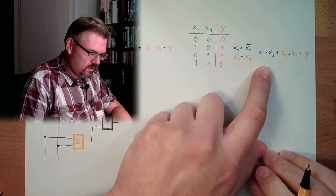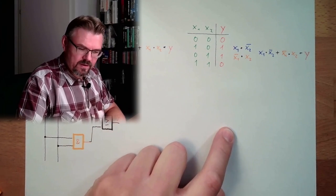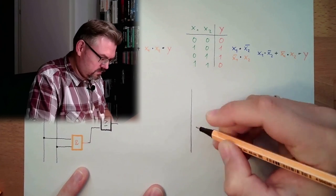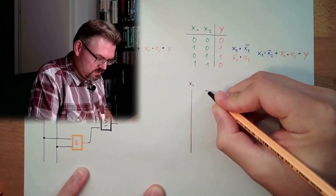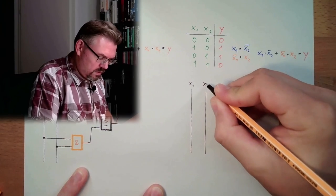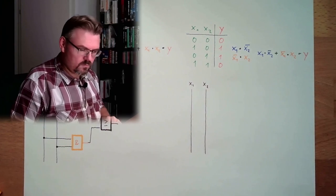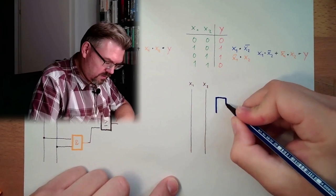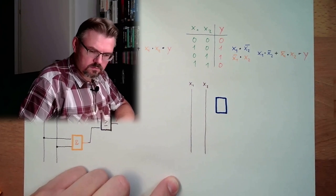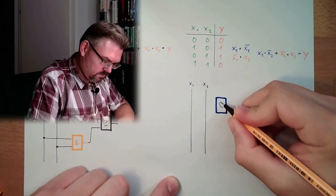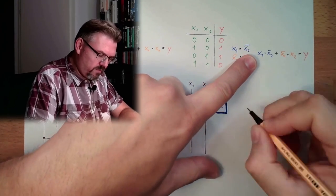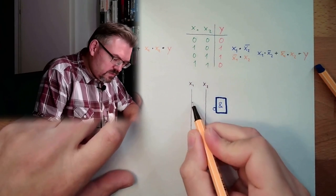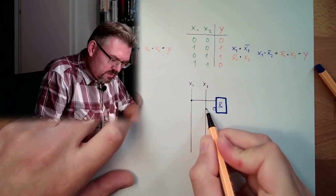Now let's draw again the logic circuit. x1, x2. The blue one is an AND. x1 must not be inverted. x2 must be inverted. So here is x1. Here is x2.